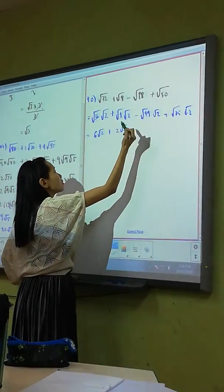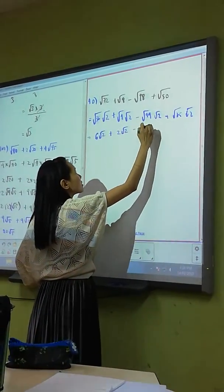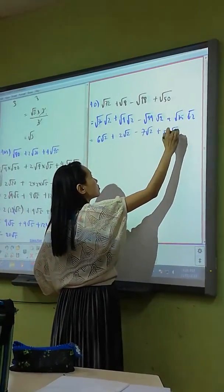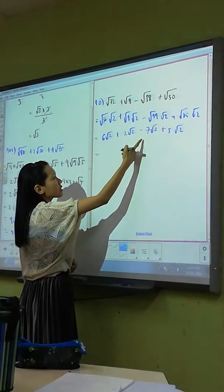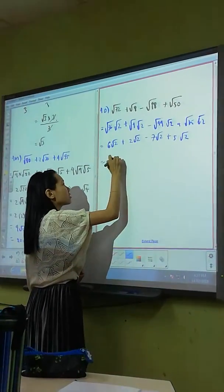Plus 2 square root 2, minus 7 square root 2, plus 5 square root 2, plus 5 square root 2. 6 square root 2. So what do we get? 8 minus what? Minus 7? 1, yeah. 6 square root 2, 1.